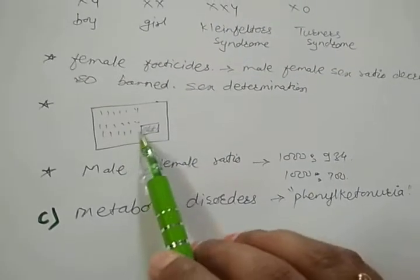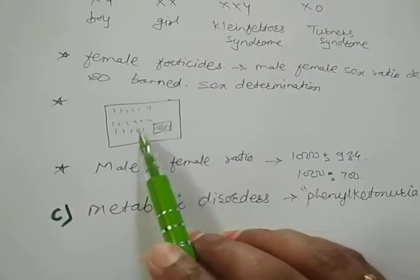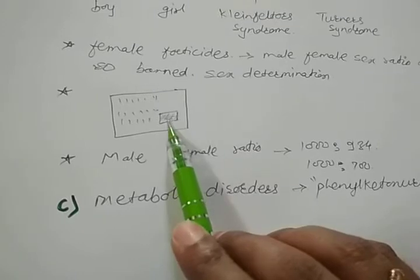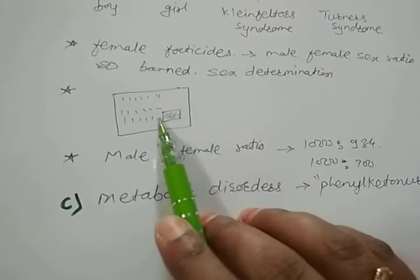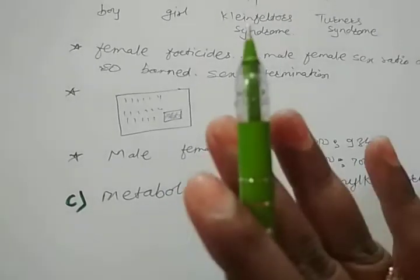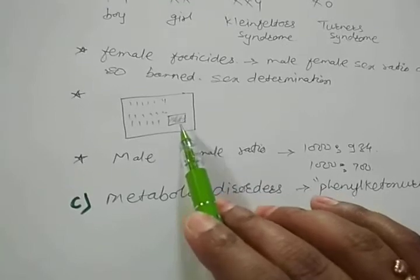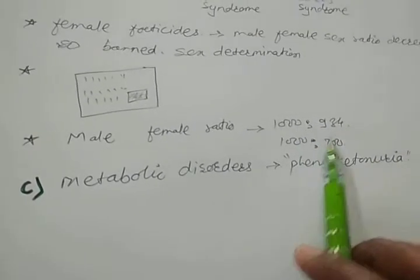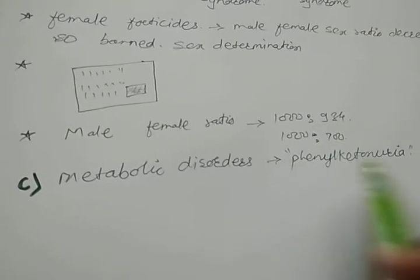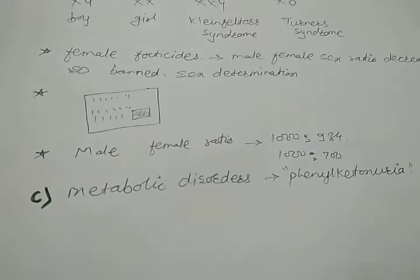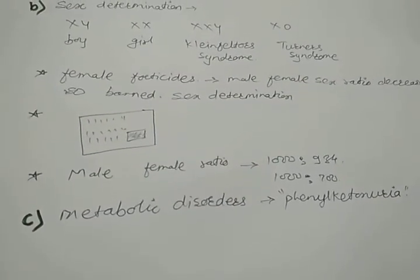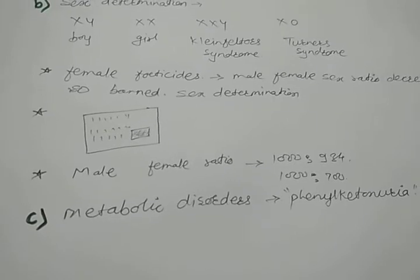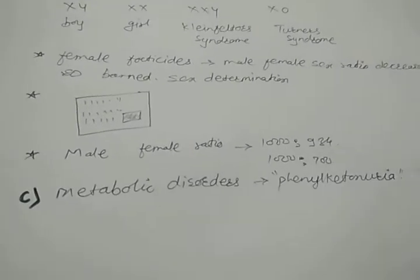Whenever we go to the doctor, whatever result they give from karyotyping — regarding chromosomes, whether X Y or X — for sex determination, doctors do some labeling, writing, or stick something on it so that you cannot detect whether it is male or female. The ratio, suppose 1000 males to 934 females, and in some states it is as low as 700 females per 1000, shows a huge difference. This is why sex determination by karyotyping has been banned; it is only used in very hard conditions with the permission of specialized doctors.